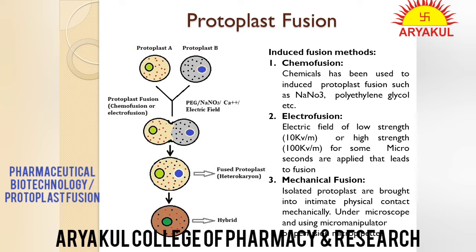Ab agar 2 protoplasts hain — plant cell wall hatakar purify kar liya — ab fuse karna hai. Aise hi fuse kyun nahi hote? Because the surface of the plasma membrane carries a negative charge — plasma membrane negative charge carry karta hai — so they repel each other. Is liye humein ek inducer chahiye. This inducer reduces the electronegativity and allows the protoplasts to fuse with each other. Inducer chemical bhi ho sakta hai, electric current bhi, aur kuch mechanical methods ka bhi istemal hota hai.